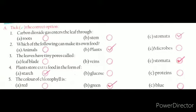Third question: The leaves have tiny pores called? Options are leaf blade, veins, stomata. Answer is stomata. Fourth question.